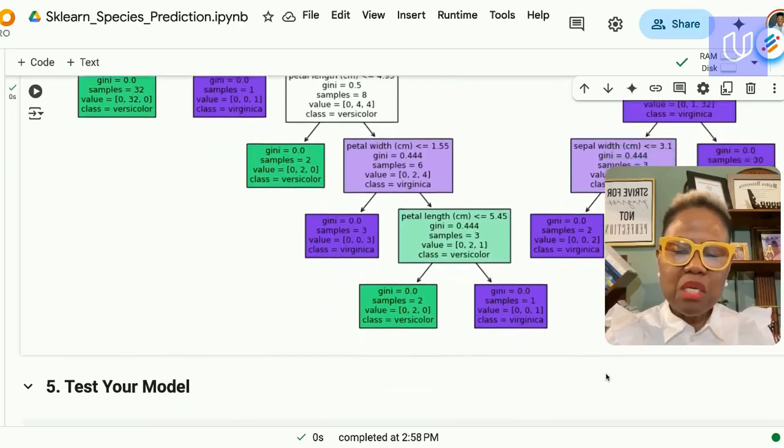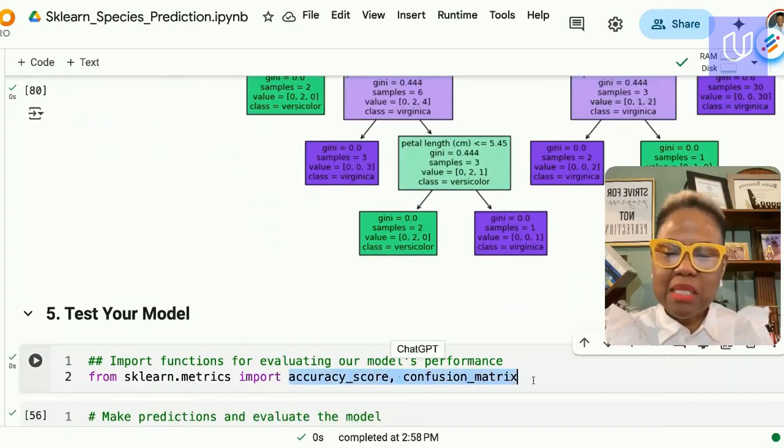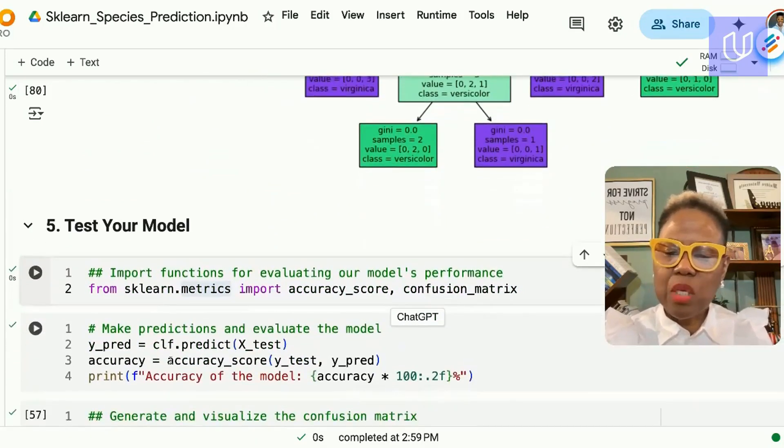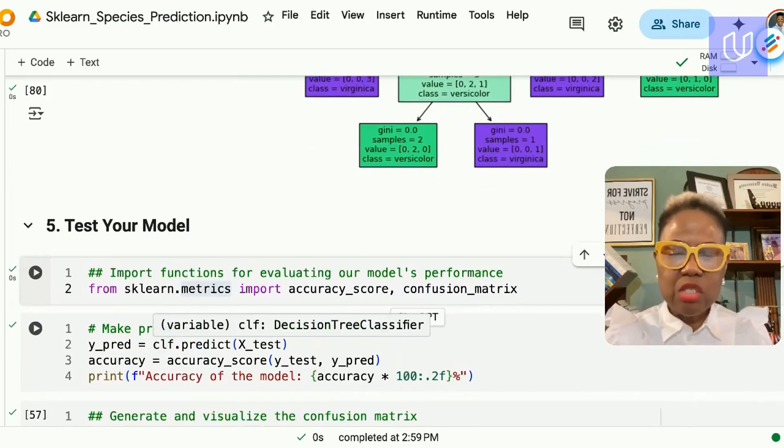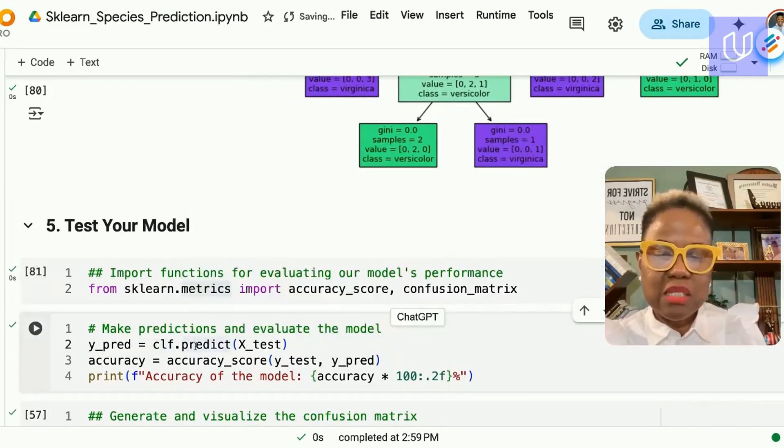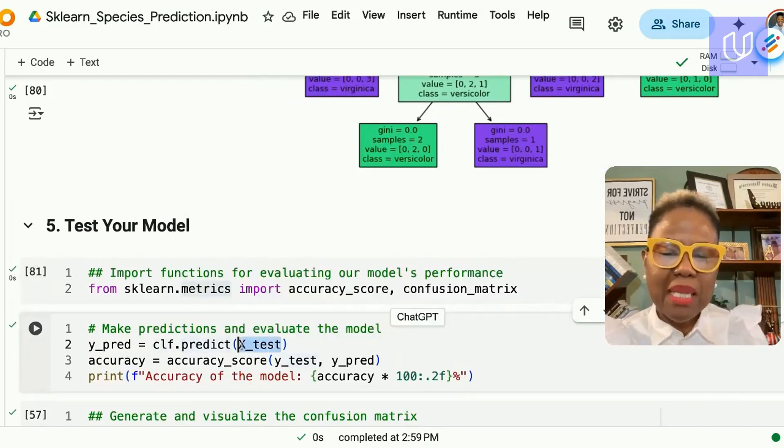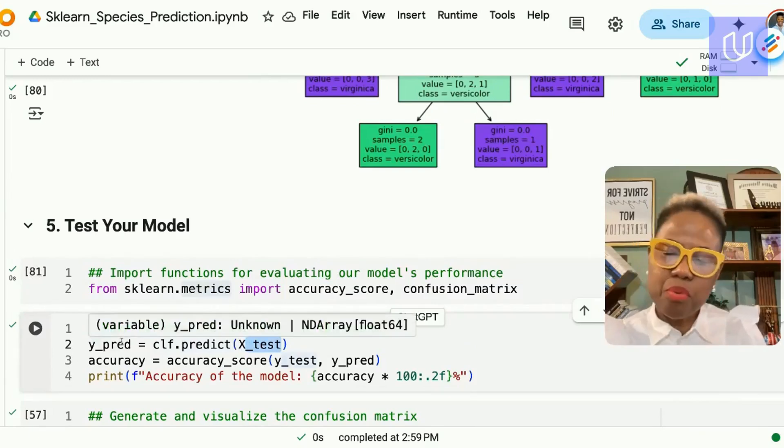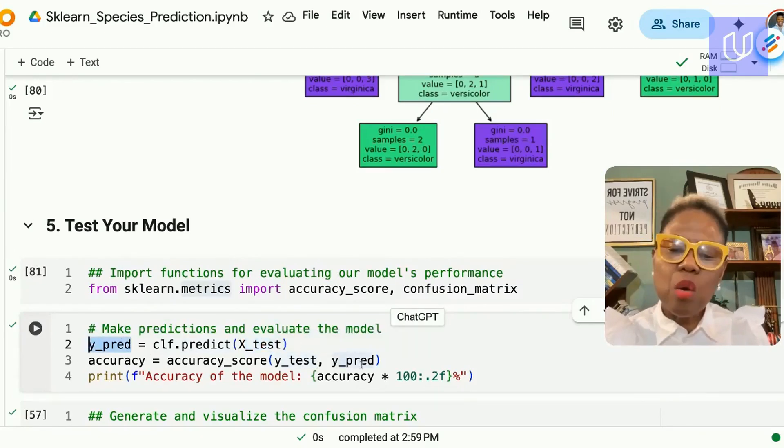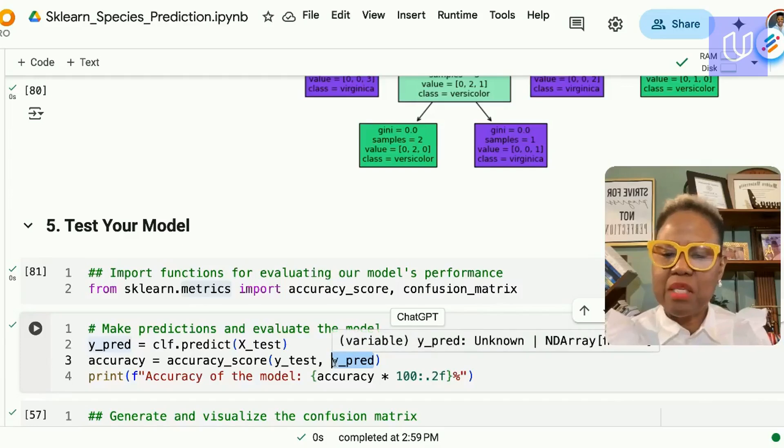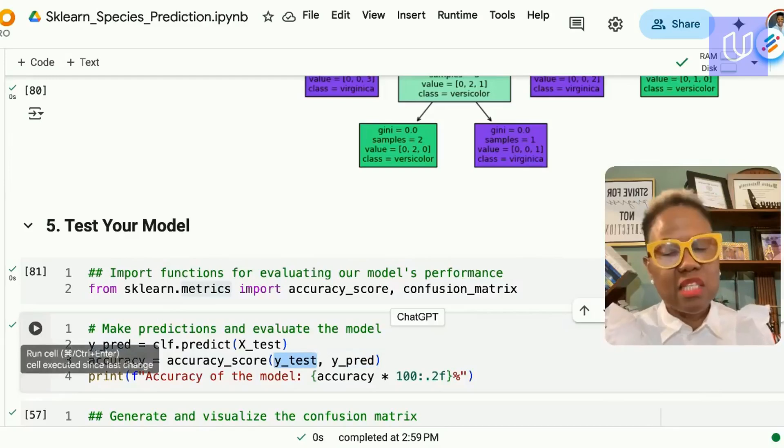Now once we have our model we want to see how well it's performing. SKLearn has a number of different functions to evaluate performance in the sklearn.metrics module. We import that and we can now make predictions with our model using the .predict and applying that to the test set to get some predictions and once we have the y_pred values we compare the y_pred values to the actual values in the test set and see how well the model did in predicting the species.